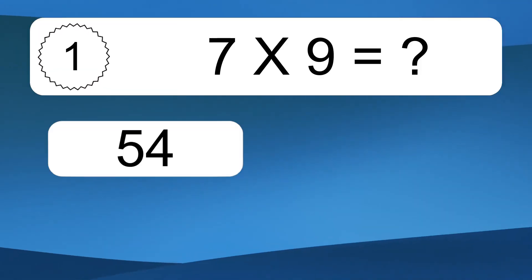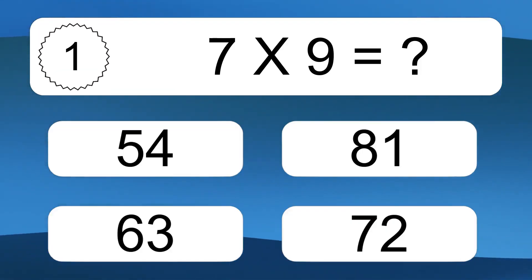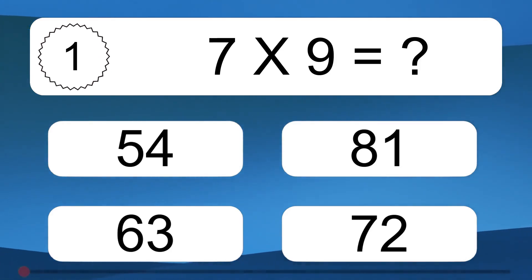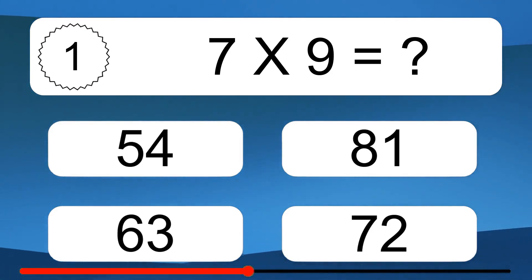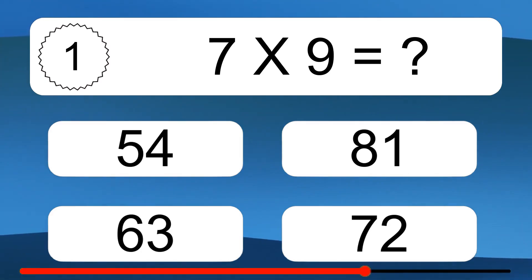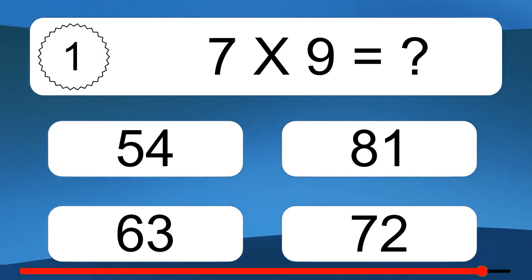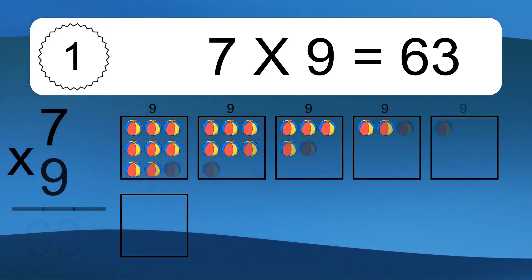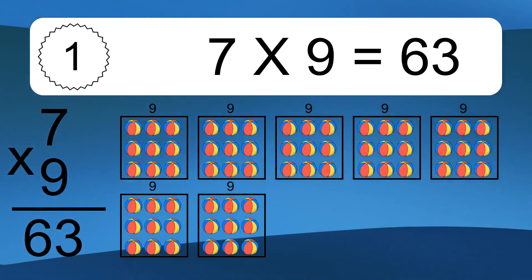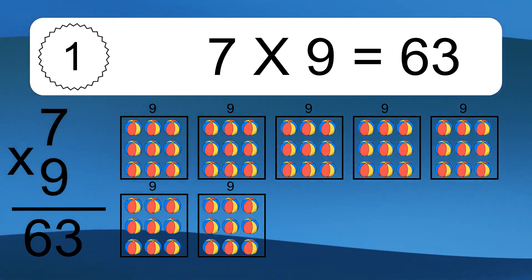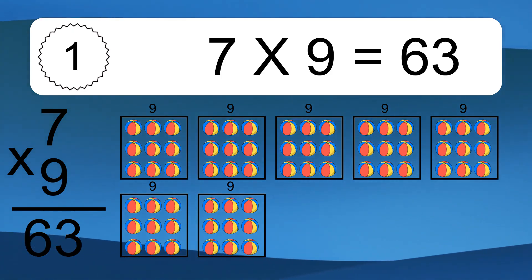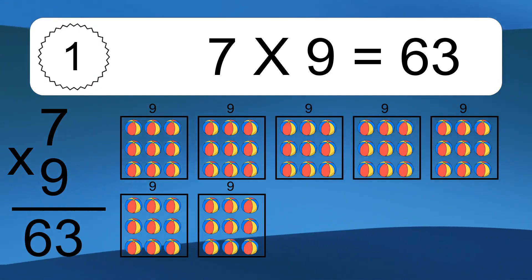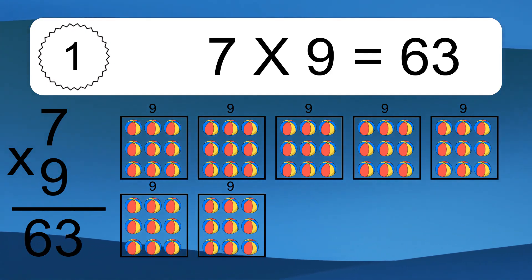7 times 9 equals what? 7 times 9 equals 63. We have 7 boxes, and each box has 9 colorful balls inside. If you count all the balls in all the boxes together, you will have 7 times 9 balls. This equals 63 balls.